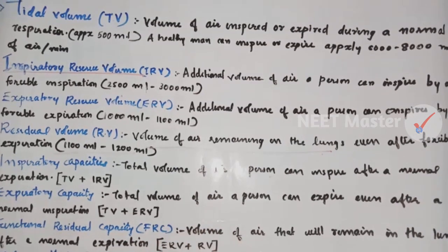Tidal volume is the volume of air inspired or expired during a normal respiration. If we can inspire or expire during a normal respiration, that volume of air is the tidal volume. A healthy man breathes approximately 6000 to 8000 ml of air per minute.